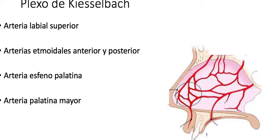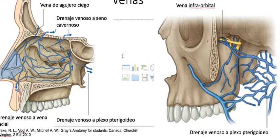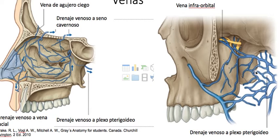Now we will see the venous drainage. The veins accompanying the arteries from branches of the maxillary artery all drain to the pterygoid plexus in the pterygopalatine fossa, except the infraorbital vein, which drains to the pterygoid plexus but bypasses the pterygopalatine fossa. Venous drainage from the anterior region of the nasal cavity drains to the facial vein, and drainage from the ethmoidal veins drains to the cavernous sinus.